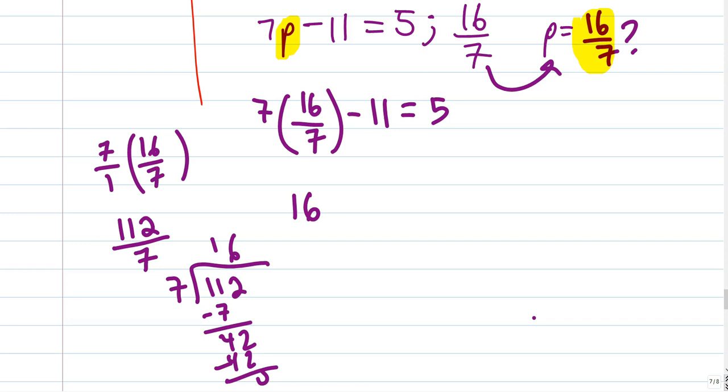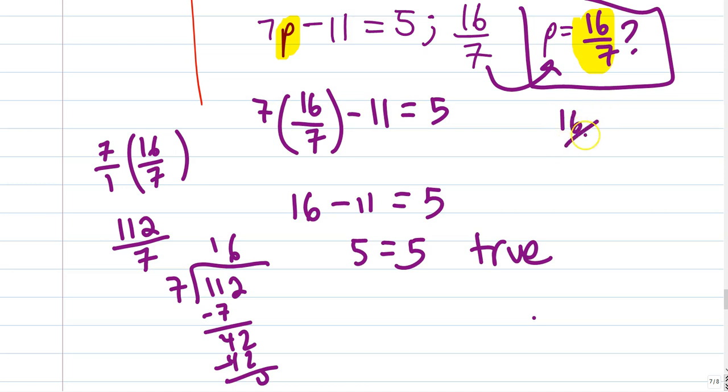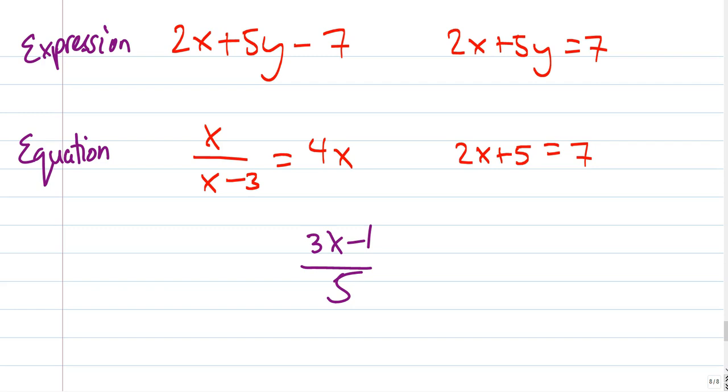Then we got 16 minus 11 equals 5. Keep evaluating. 16 minus 11. We get 5 equals 5. That is true. Which means what? P equals 16 over 7. Or we could say that 16 over 7 is a solution.